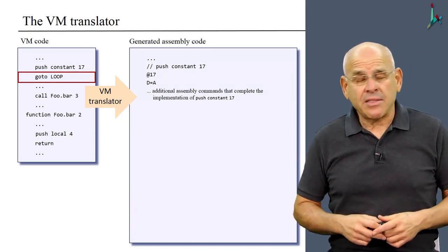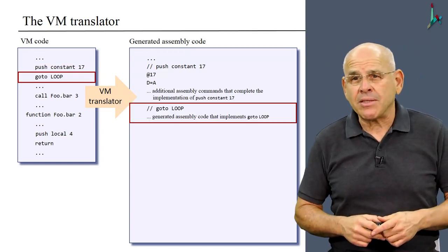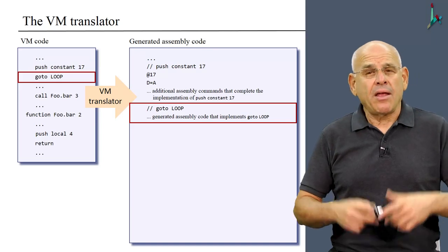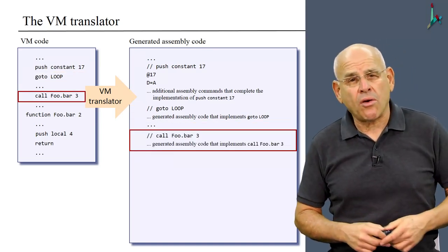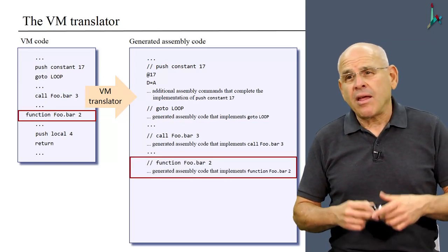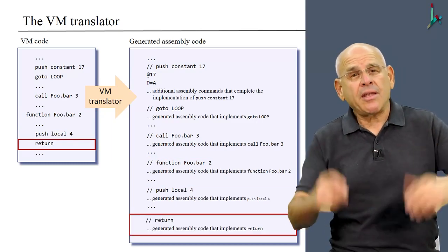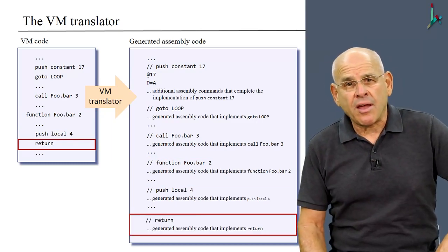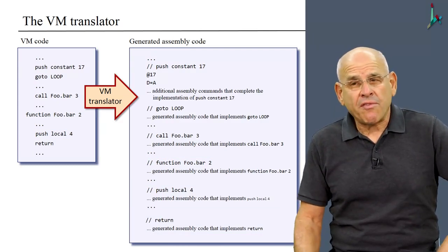And then it finds the command go to loop and generates code that implements this go to command. It does the same with call, moving along. It generates code that implements the function command, then the push, then the return, and so on, until it hits the end of the input source file. So that's the nature of the VM translator.